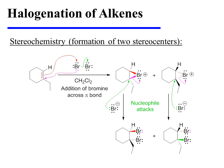Here, it's important to remember that the attack of bromide occurs opposite the leaving group. As a result, we see the anti-stereochemistry of this halogenation. The two bromines that have been added across the alkene pi bond reside on opposite faces or opposite sides of the ring.